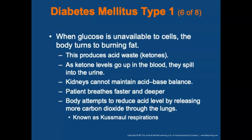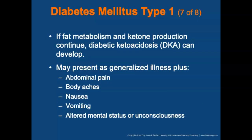In type 1 diabetics, when glucose is unavailable to the cells, the body turns to burning fat, which produces acid waste called ketones. As ketone levels rise in the blood, they spill into the urine. The kidneys become saturated with glucose and ketones and cannot maintain acid-base balance. The patient breathes faster and deeper as the body attempts to reduce acid levels by releasing more carbon dioxide, resulting in Kussmaul respirations. If fat metabolism and ketone production continue, a life-threatening illness called diabetic ketoacidosis, or DKA, can develop.